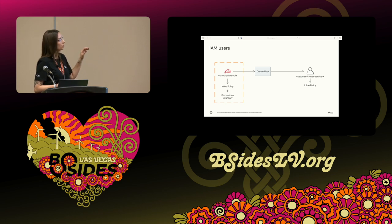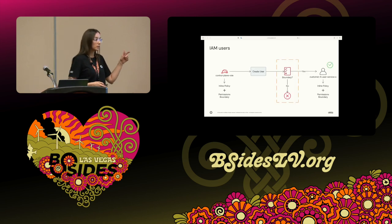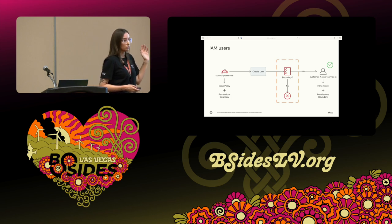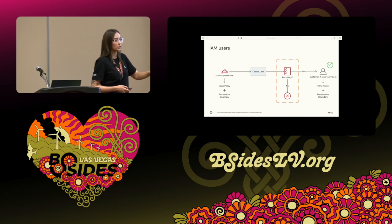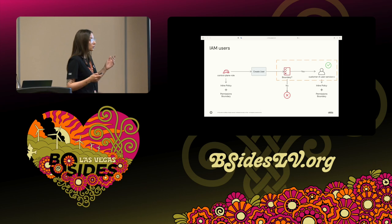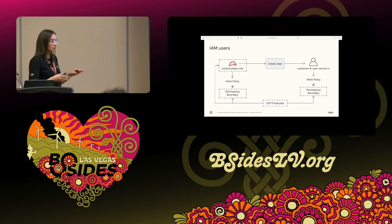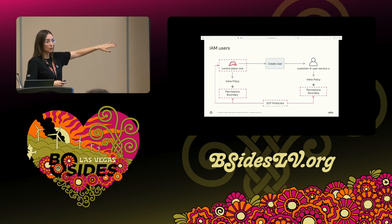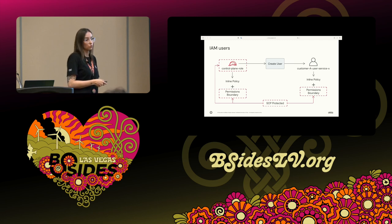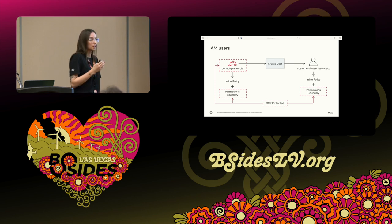If the user was created with the correct boundary attached, everything would be successful — it would have its inline policy and the permissions boundary. If not, the creation would simply fail. On top of all this, we used SCPs to protect the resources involved: the permissions boundary for the control plane role and the user boundary are both protected at the SCP level, meaning they're added to a list of resources that should not be tampered with except by specific roles.